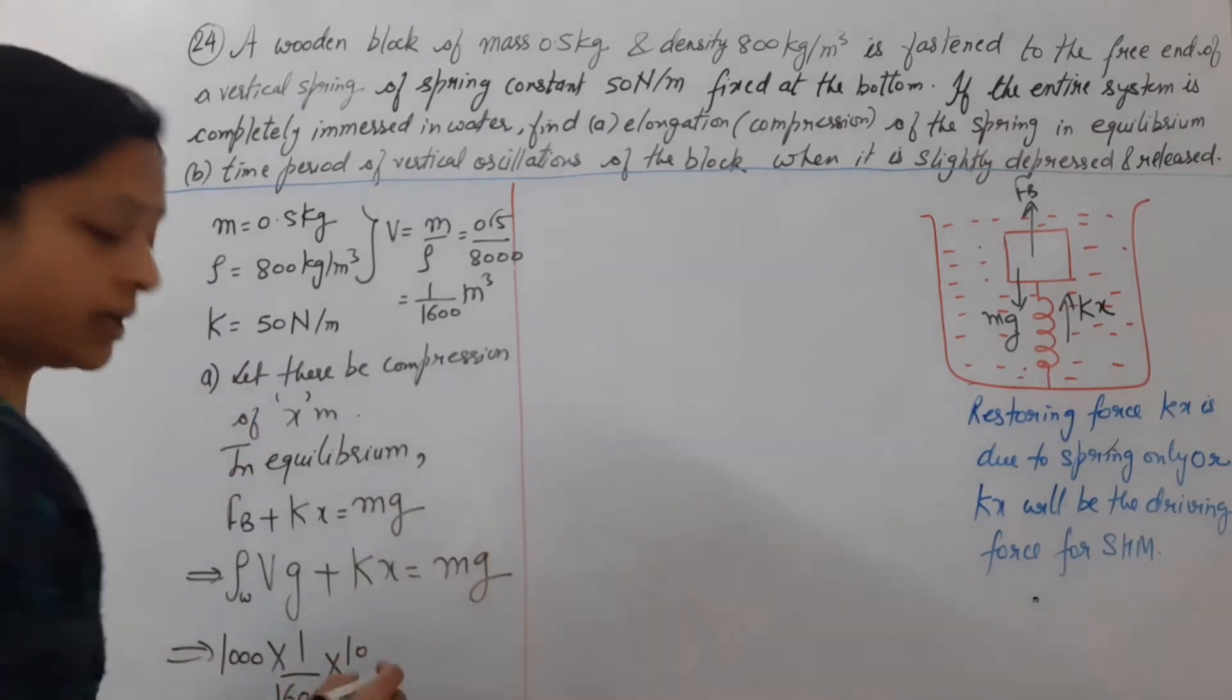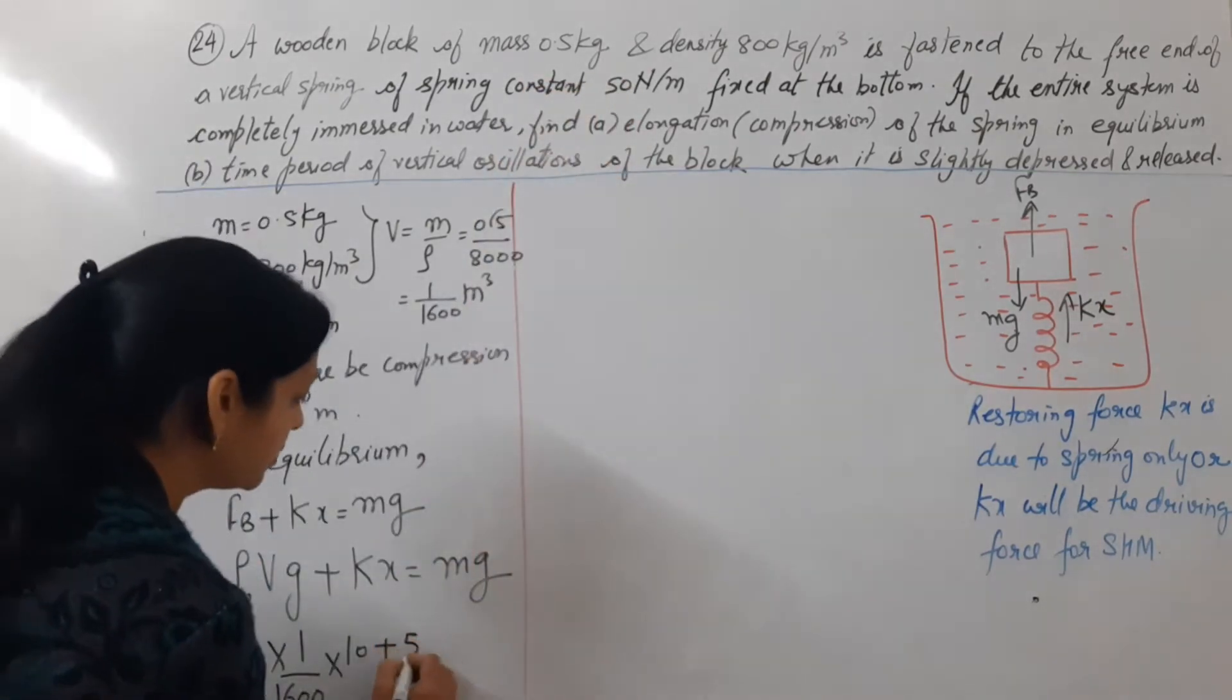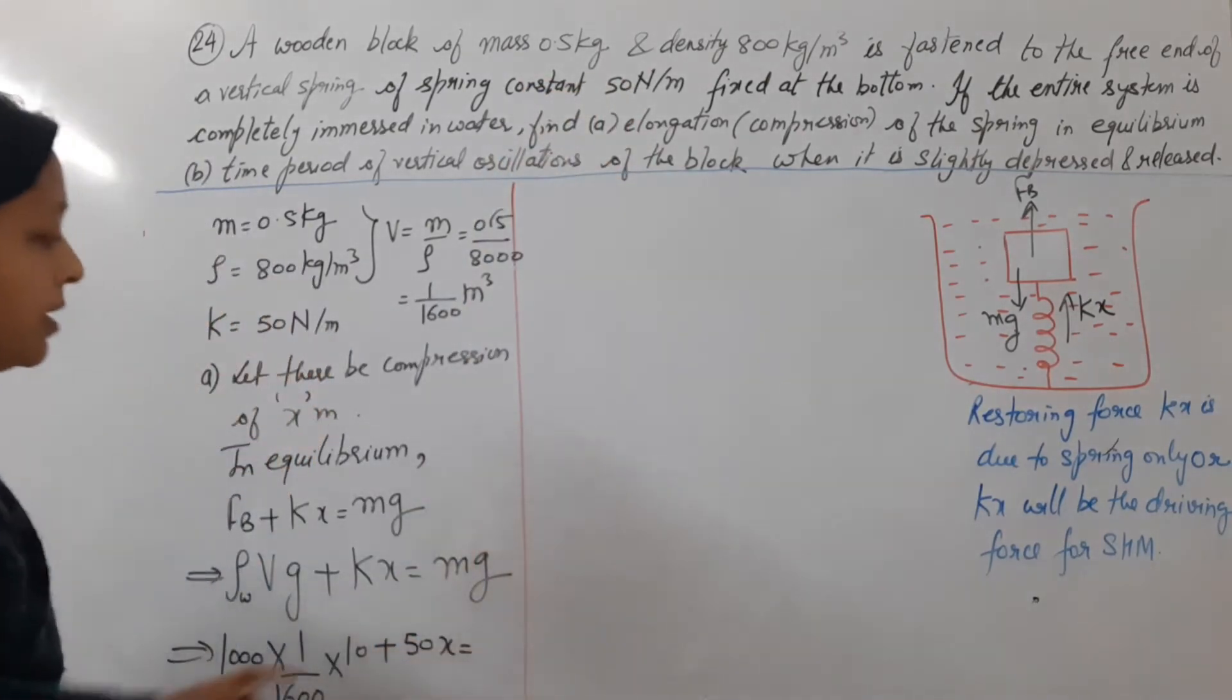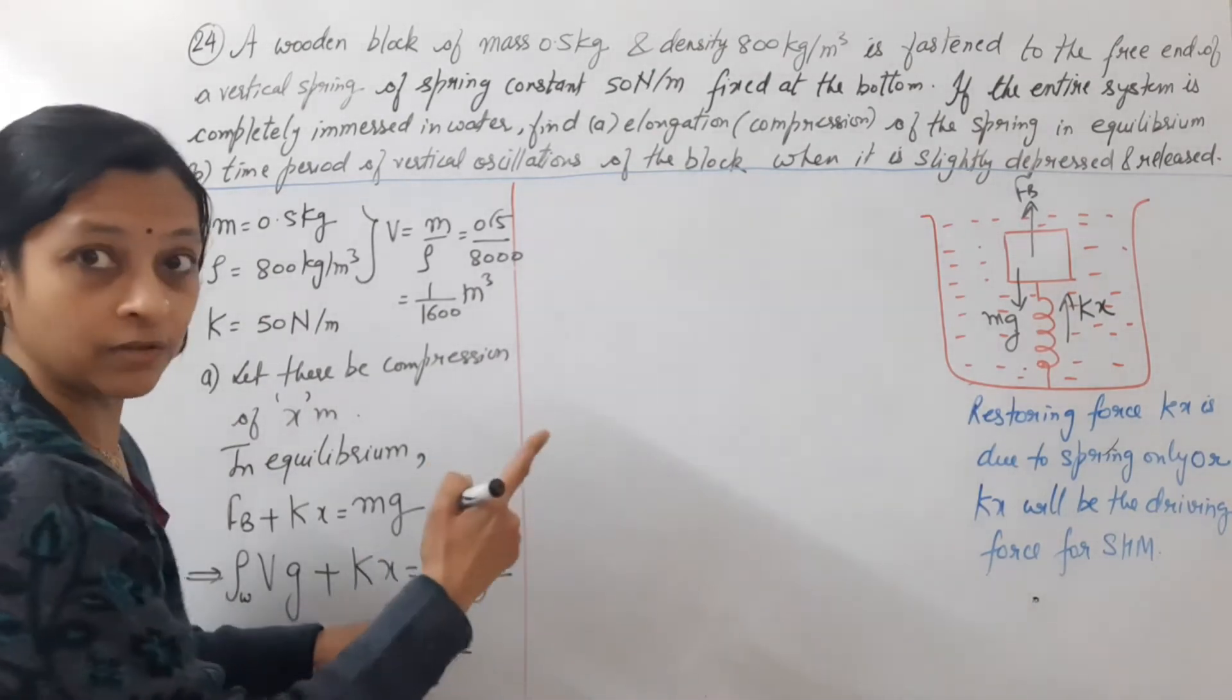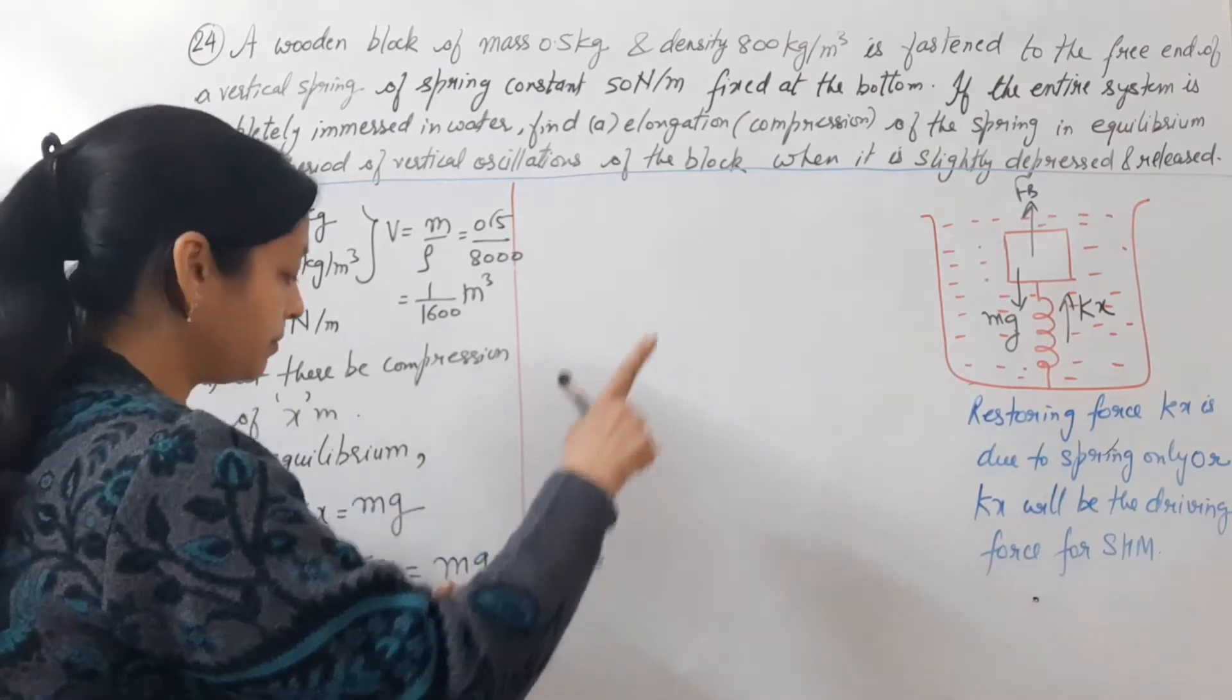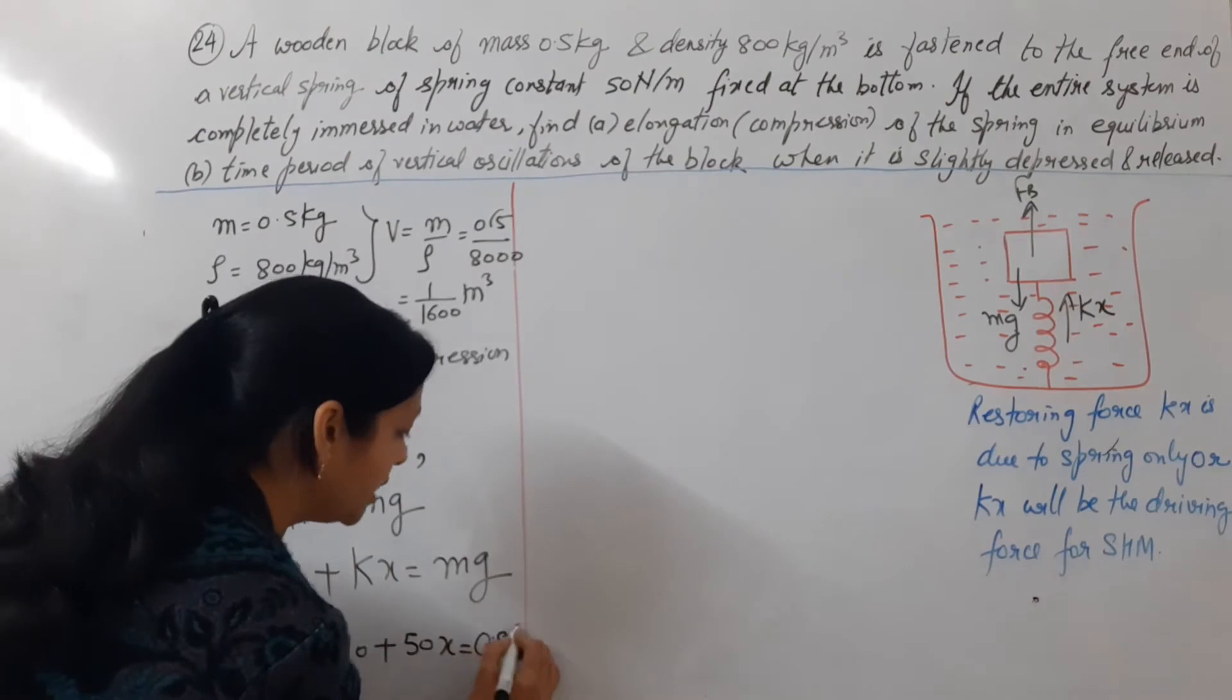Plus k, spring force, spring constant k is 50, x, equal to m mass. What is the mass here? Weight of the solid. Solid here is the block. Or block ka weight is mg. Mass given is 0.5 and g is 10.